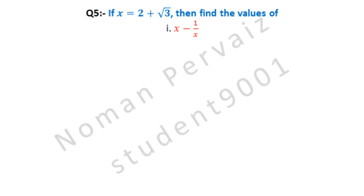Question number 5 is: if x is equal to 2 plus under root 3, then find the values of — and part 1 is x minus 1 over x. Let's see its solution.